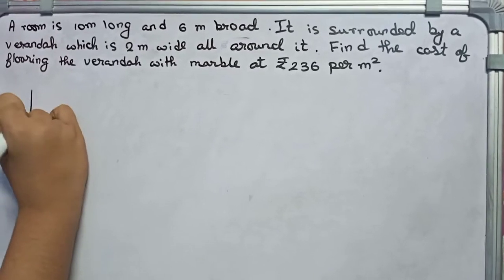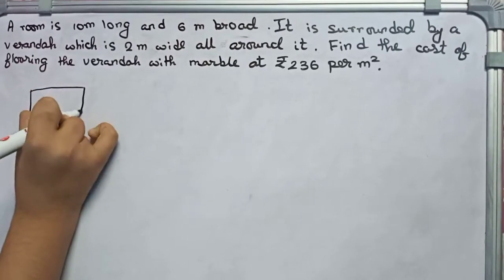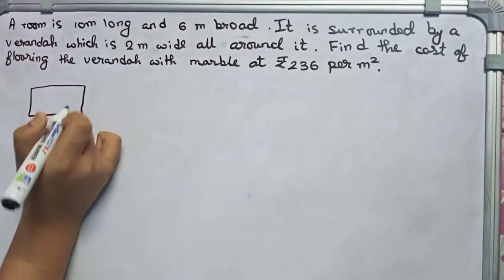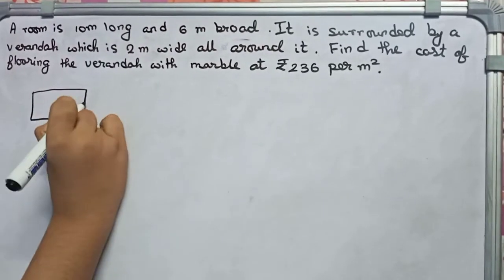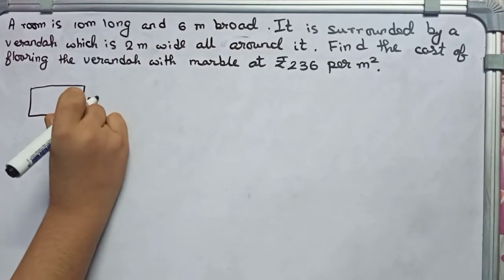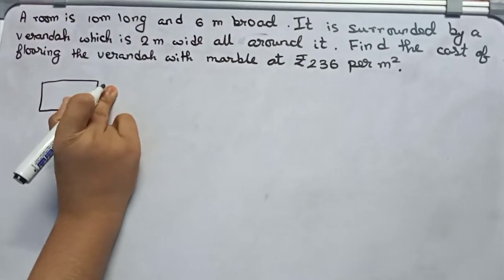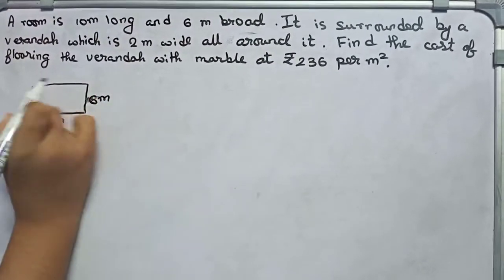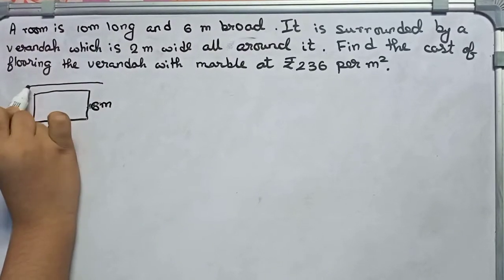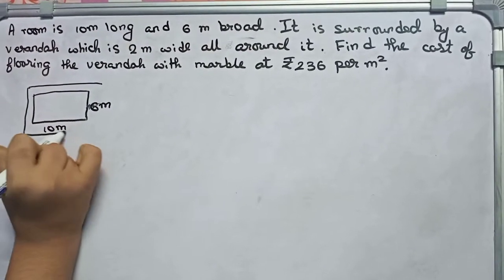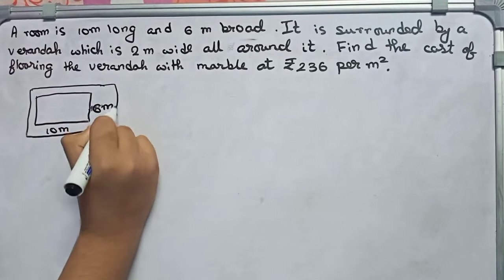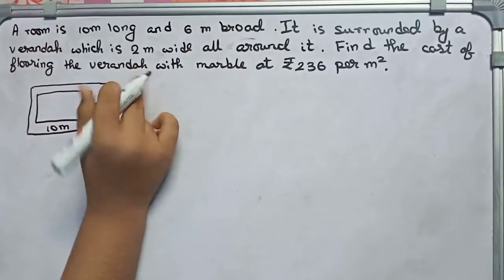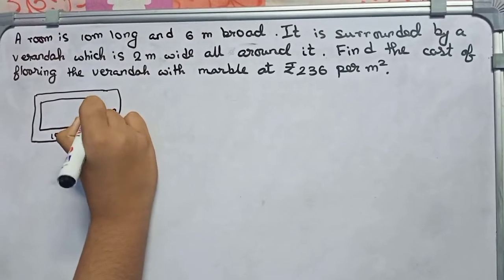So let it be — this is our room. It is 10 meter long and 6 meter broad. Now you draw a veranda all around the room. So let it be — this is our veranda. It is 2 meter wide all around it.